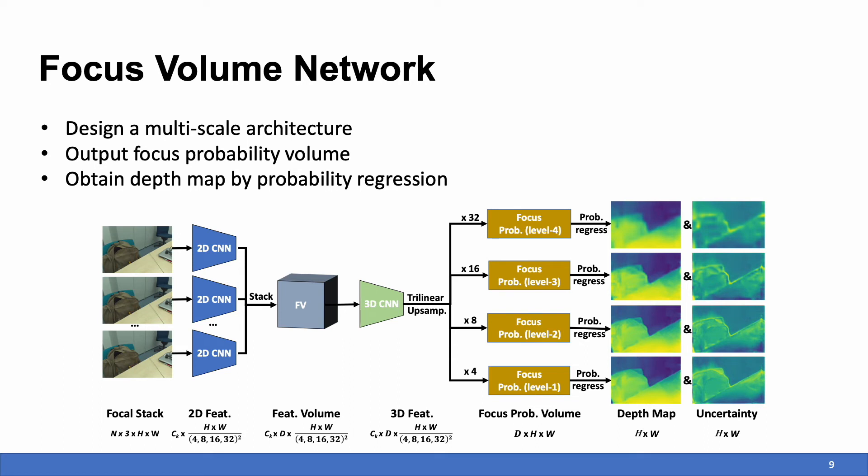The overall idea is very similar to what we just discussed, but we apply a multi-scale architecture. And we ask the network to predict probability volume, which indicates the probability of a pixel being best focused.